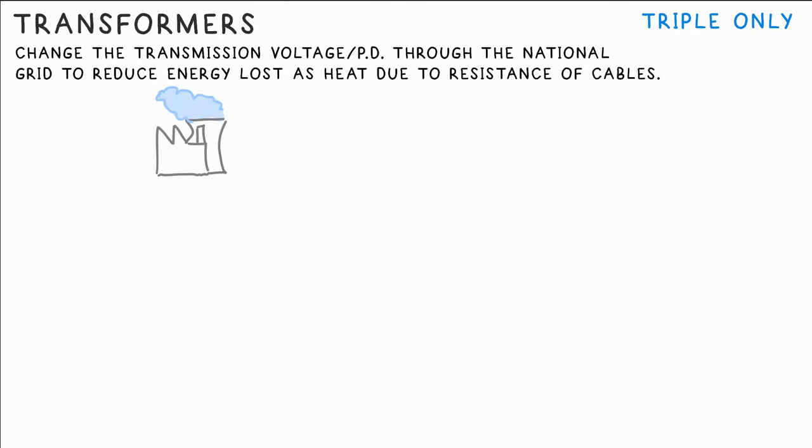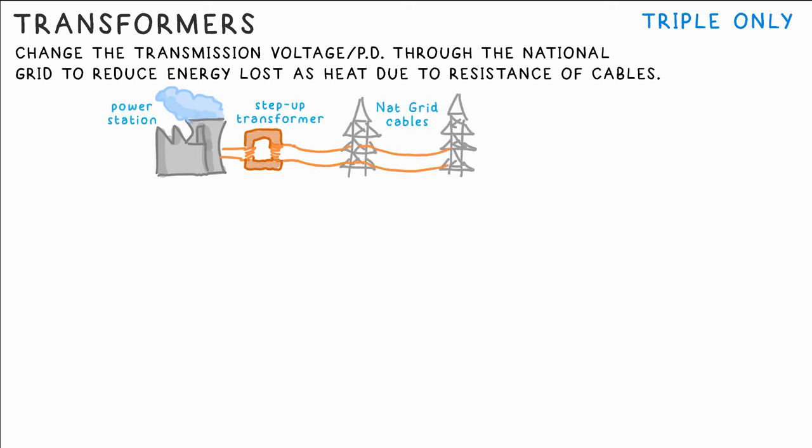Transformers are used in the national grid to change the voltage at which the electricity is transmitted through the overhead cables. The current from a power station is so high that too much energy would be lost due to the resistance in the cables if it just went straight into them.